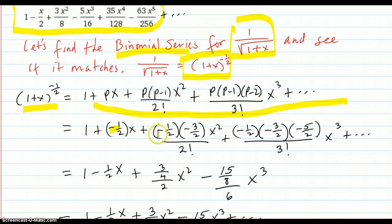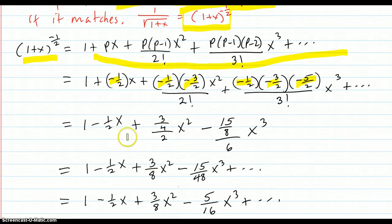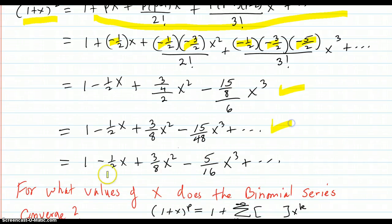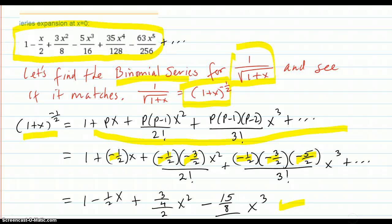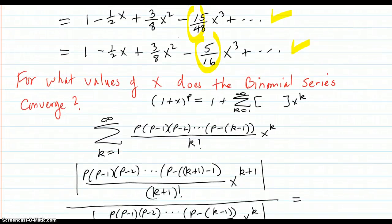So, we just match it up to the formula and then plug everything in. p is negative 1 half. Negative 1 half. Negative 1 half minus 1 is negative 3 halves. Negative 1 half, negative 3 halves, negative 3 halves minus 2. Or, I'm sorry, negative 1 half minus 2, negative 5 halves. So, then simplify that out and you get this. Simplify that last number here, you get this and that matches up exactly to Wolfram Alpha. We did these terms right here. So, that all works out. So, the binomial series is working.